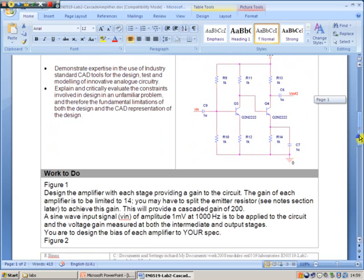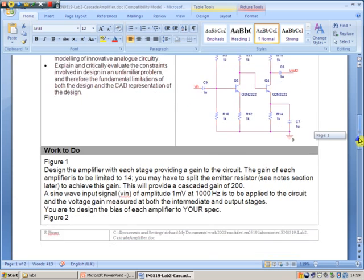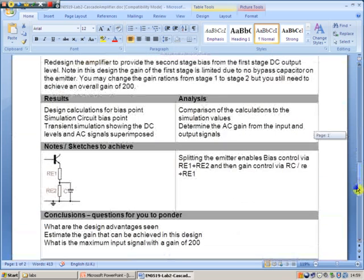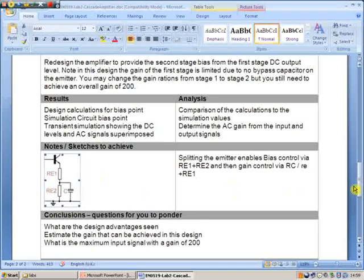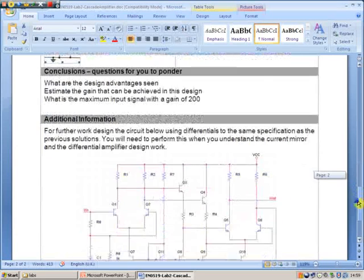So you're going to design with an overall gain of 200. We want to split that gain between the two BJTs. Ballpark gain of about 14 each. We may need to do some splitting of the emitter. I'll come on to that in due course.